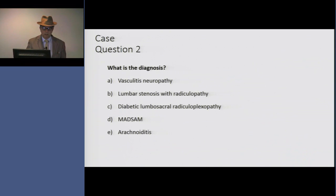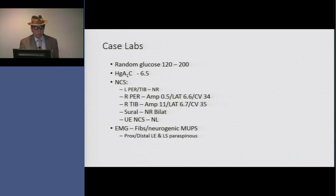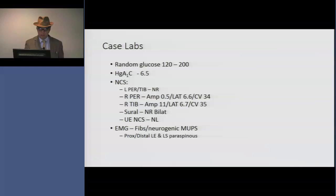So what diagnosis is this? The diagnosis here is diabetic lumbosacral radiculoplexopathy. Her labs showed some mild random glucose elevations with a hemoglobin A1c of 6.5. Her nerve conduction showed low amplitude peroneal and tibial motor potentials with some appropriate velocity slowing. Sural responses were absent bilaterally, and the upper extremity nerve conductions were normal. On EMG, she had fibrillations not only distally, but also in the proximal leg muscles and paraspinous.